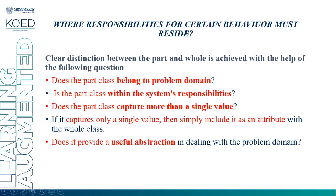Where the responsibility for certain behavior must be decided, clear distinction between the part and the whole is achieved by asking the following questions: Does the part class belong to the problem domain? Is the part class a system responsibility? Does the part class capture more than one single value? If it captures only a single value, simply include it as an attribute of the whole class. Does it provide a useful abstraction in dealing with the problem domain? These questions should be asked to identify the whole and part relationship.